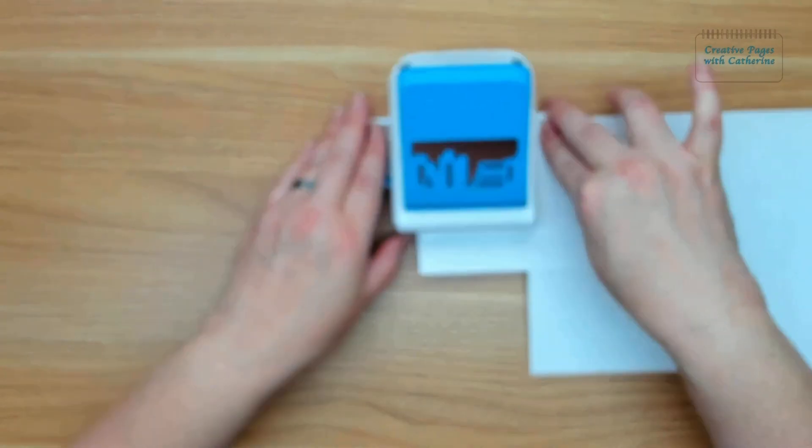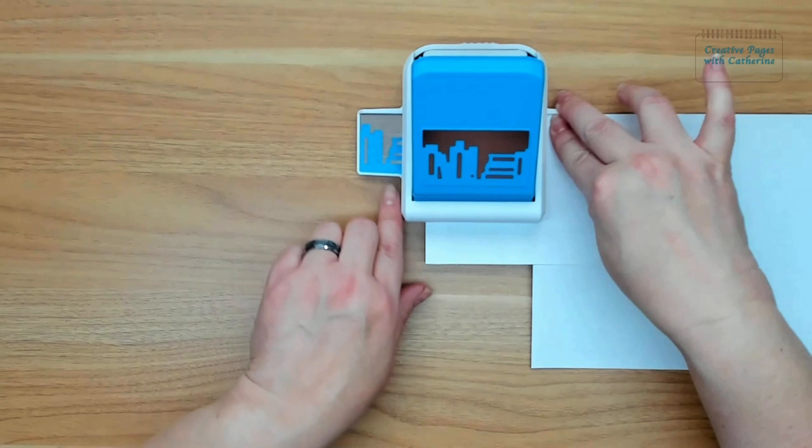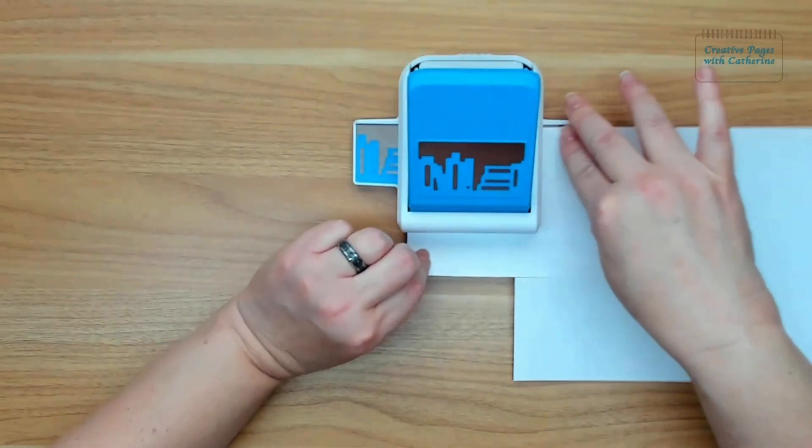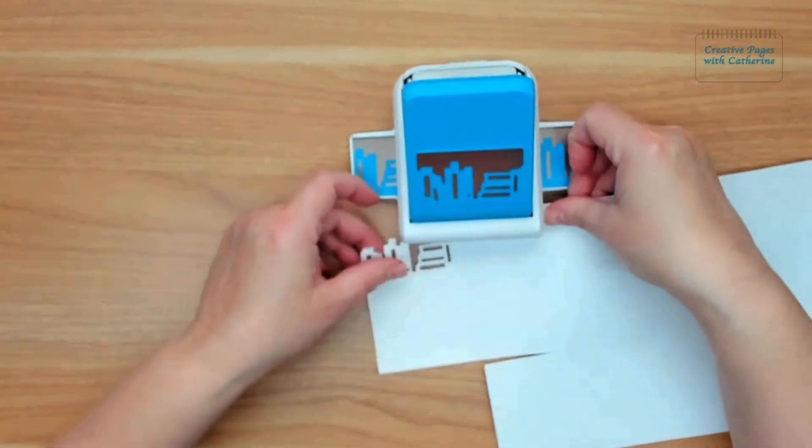There's a little ledge that'll help hold your paper in place where it needs to go. Line it up with the black line, not with the edge of the punch, and let's punch.